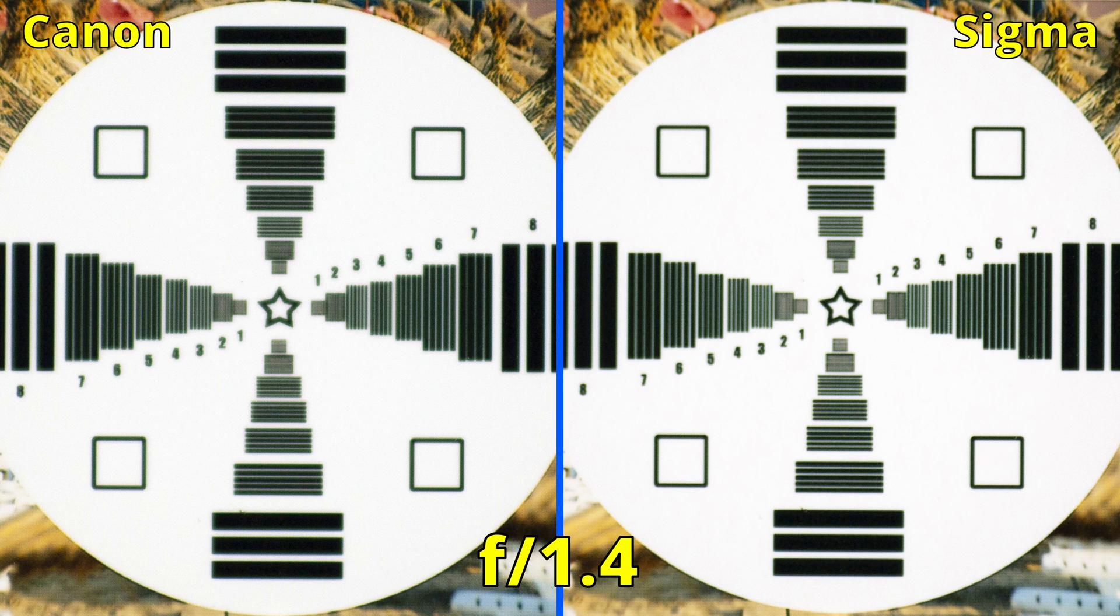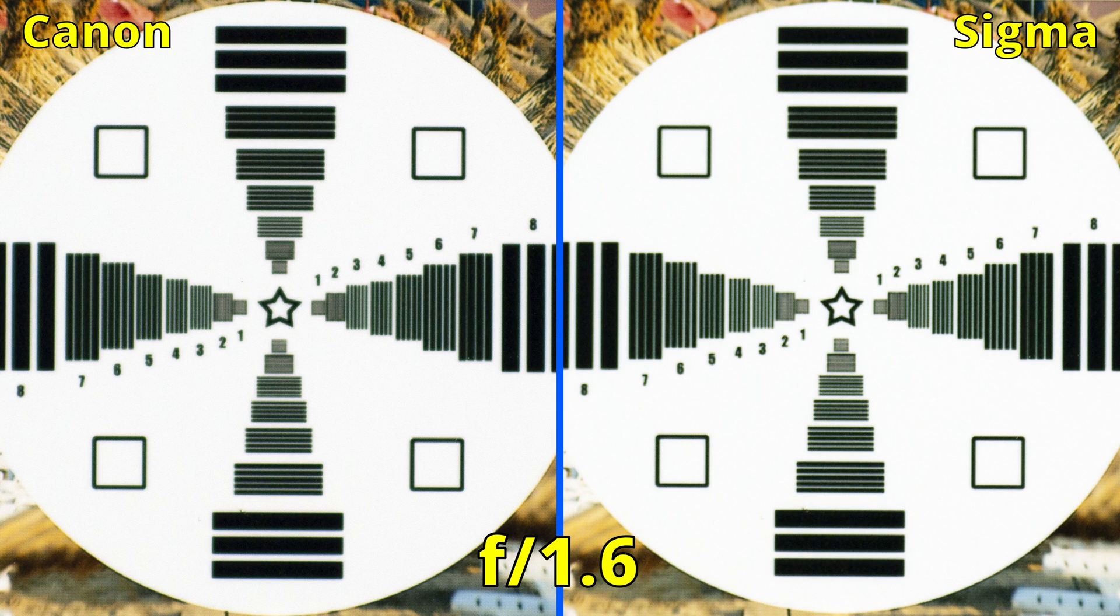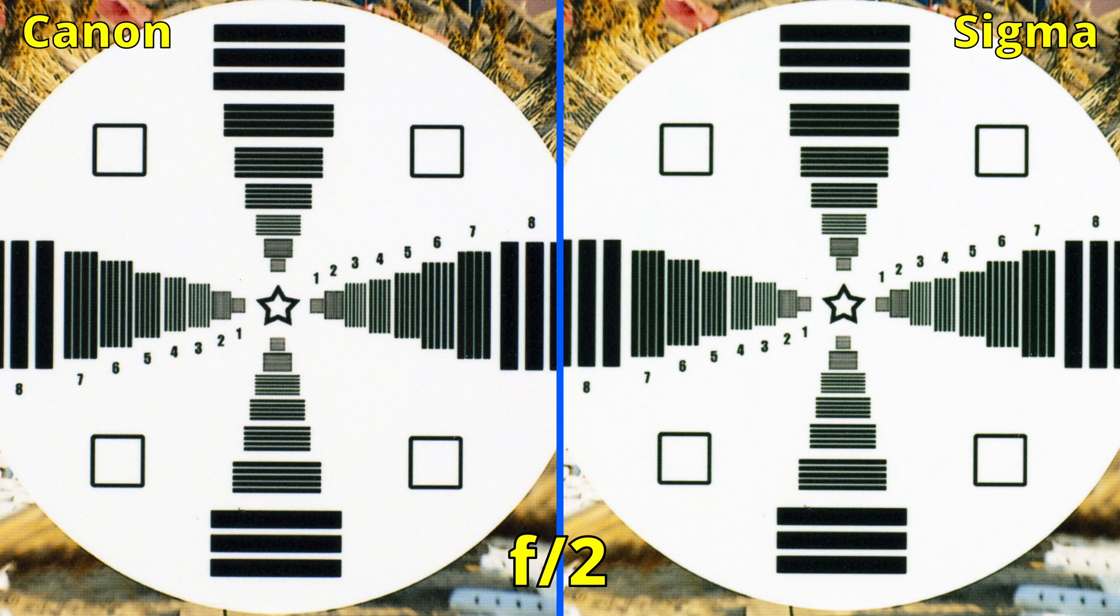At f1.4, we see some ghosting but the right side looks a bit better. Closing to f1.6, we see improvements but both lenses have the same result. At f2, great performances. It seems that the image coming from the Canon lens is just a bit more punchy.